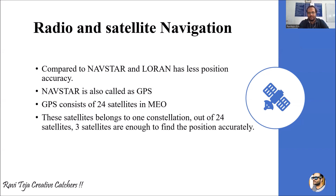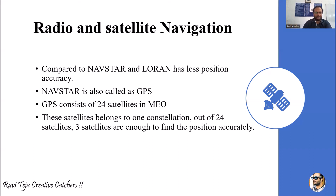Out of the 24 satellites, if at least three satellites are working, those three are enough to find the GPS position accurately. Not all 24 satellites are required at once; however, all 24 are present in that constellation. As long as at least three satellites are working perfectly, that is sufficient to find the accurate position. This is how we study radio and satellite navigation.